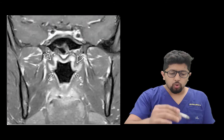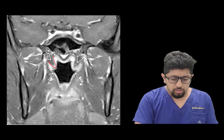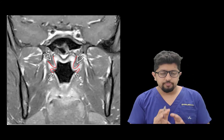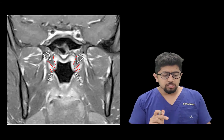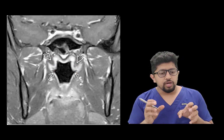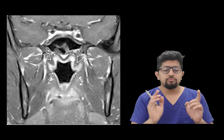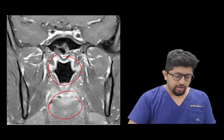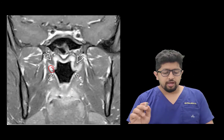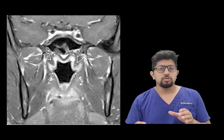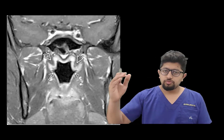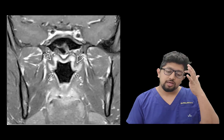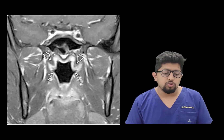On the coronal MRI image, the torus tubarius and the lateral recess of the nasopharynx are identifiable. This lateral recess is clinically important because many nasopharyngeal lesions arise from it. In the oropharynx, most lesions — including infectious processes and tumors — arise from the tonsillar bed.